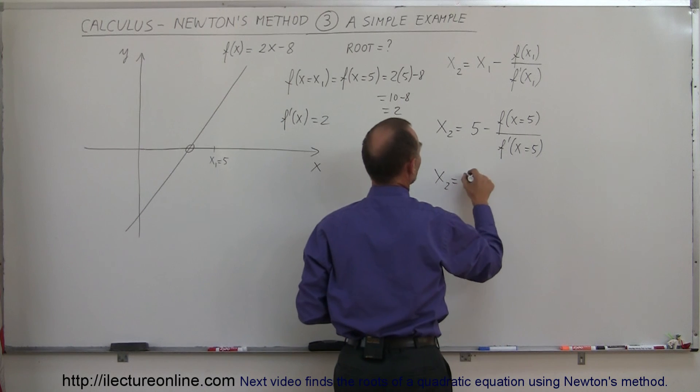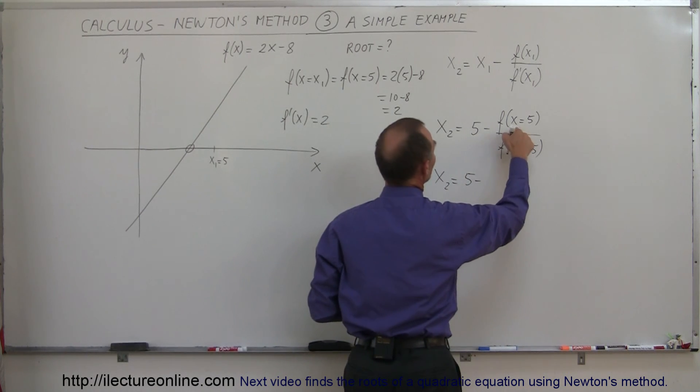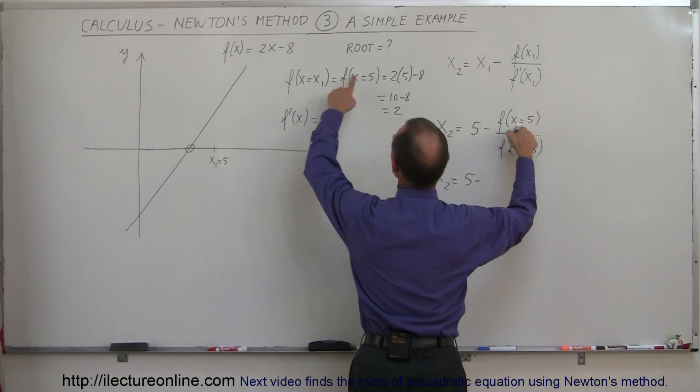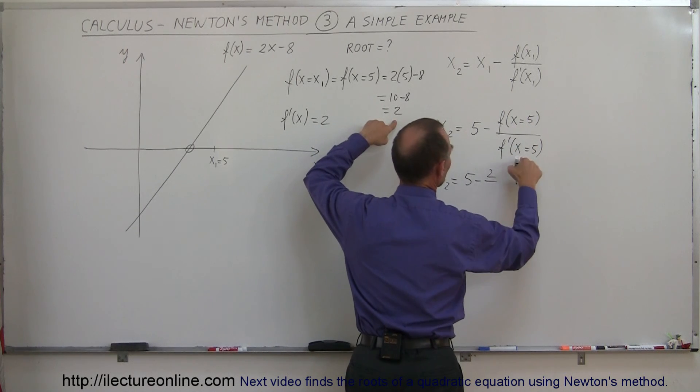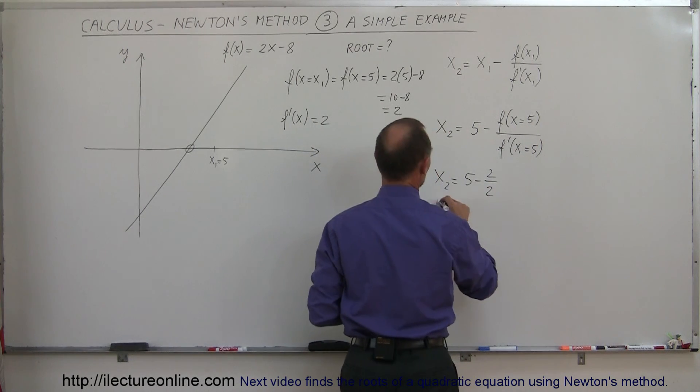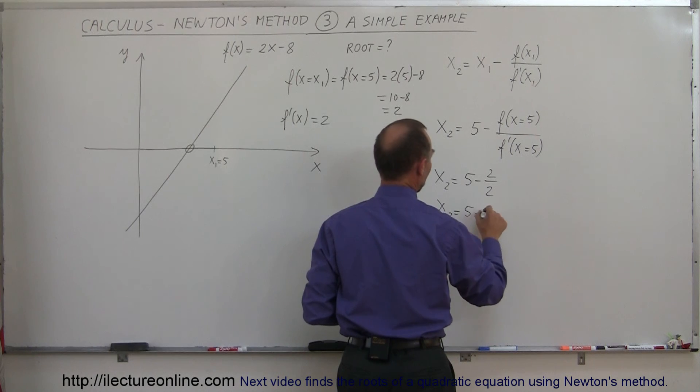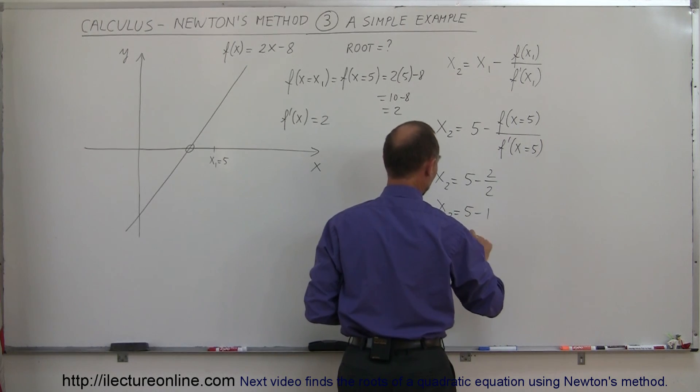And so x₂ is equal to 5 minus, the function when x is equal to 5, that would be equal to 2, divided by the derivative, which is equal to 2, which x₂ is equal to 5 minus 1, or x₂ is equal to 4.